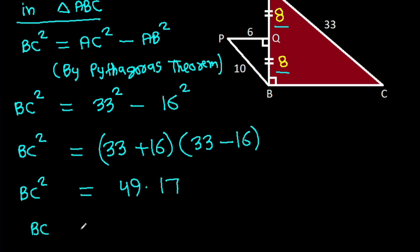So BC will be root under 49 times 17. And BC will be 7 times root 17.